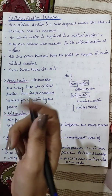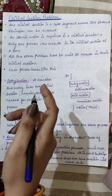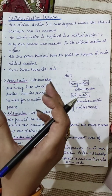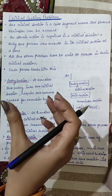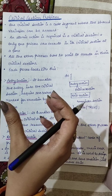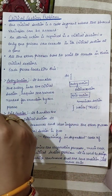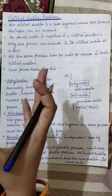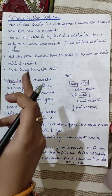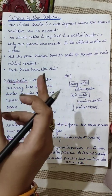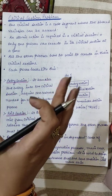We have taken the idea of what is a critical section. A critical section is a segment of the code or program where there is a shared variable accessed by one of the processes. Every program has a critical section where there is a shared resource or data, which we call the critical section.